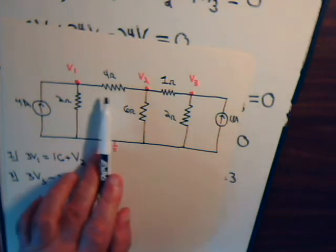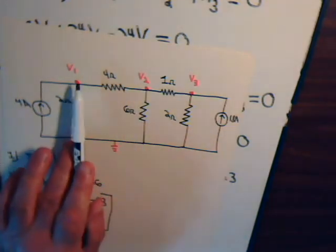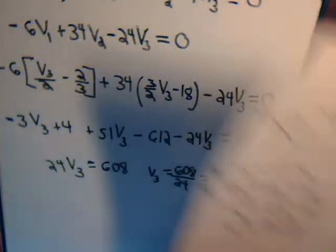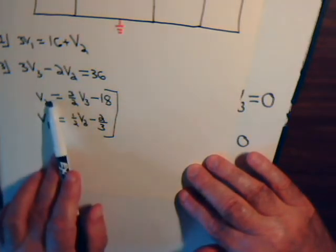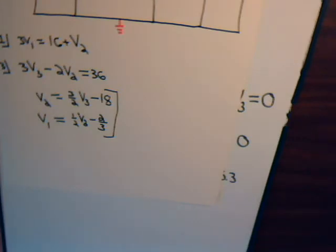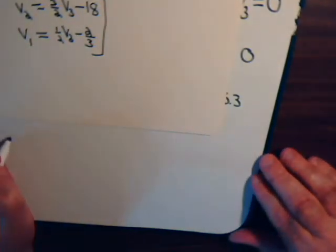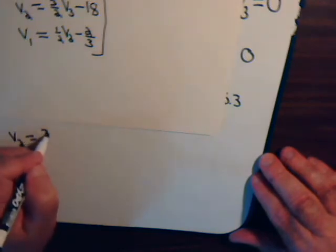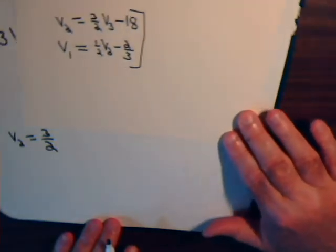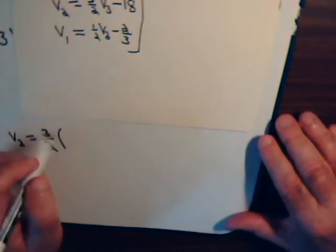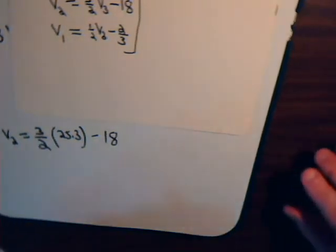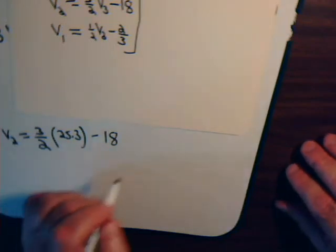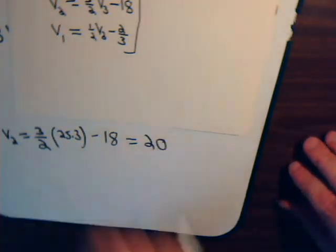We're interested in the current that goes across this resistor. So we have to know what is V2, what is V1. Well, let's just, now we're going to use this equation. We know what V3 is. We can very quickly determine V2 and V1. So let's do that. V2 equals 3 halves times V3. That's 25.3 minus 18. And going to the calculator, we get that at 20 volts.